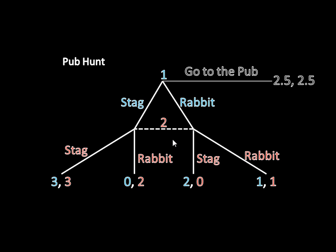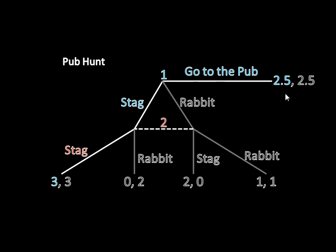That means player two knows that player one chose to hunt a Stag, because hunting a Rabbit just doesn't make sense — there's no situation where it's better than going to the Pub. So player two now knows player one is hunting a Stag. Hunting a Stag gets her 3, hunting a Rabbit gets 2, so she'll obviously want to hunt the Stag as well. From player one's perspective, if he goes hunting, player two knows he's chosen Stag and will respond with Stag, so he earns 3. In contrast, going to the Pub locks in only 2.5, and 2.5 is less than 3. So player one should want to hunt a Stag. We have a unique solution where both players are hunting Stags — no miscommunication, no discoordination. It's all because of adding the go-to-the-Pub strategy, which never ends up being played in equilibrium.